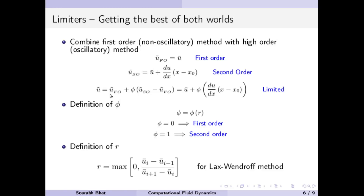We add the first order method to the difference between the second order and first order methods, multiplied by the parameter phi. If phi is equal to zero, the whole term vanishes and we are left with the first order method.